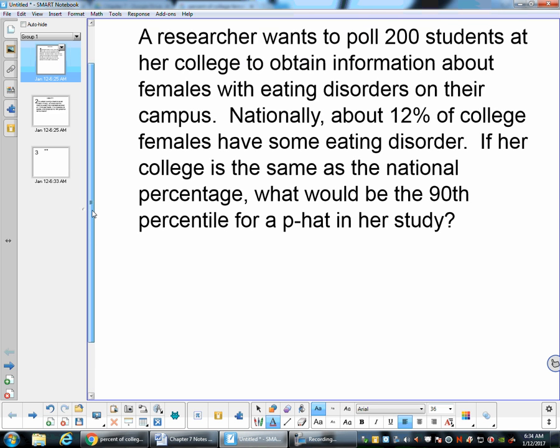If we're going to poll 200 women, we can first check to see if this looks like a normal distribution. So we have 200 times 0.12 and check to see if that's greater than 10. 200 times 0.12 is going to be 24. That's clearly greater than 10.